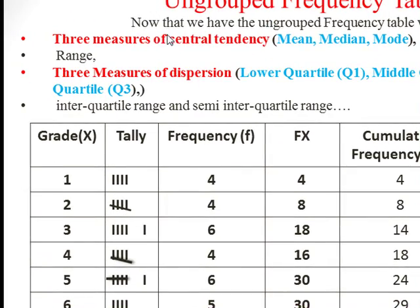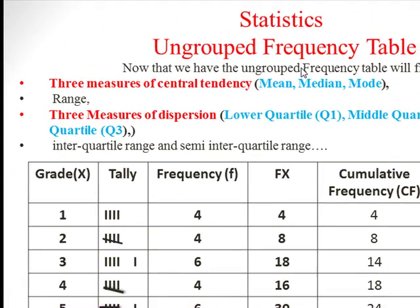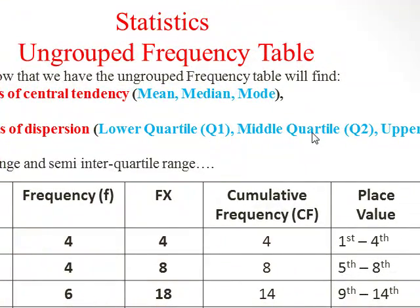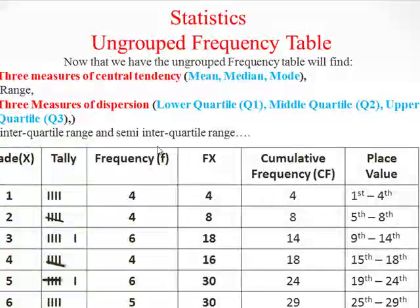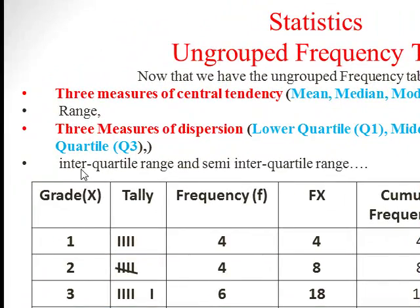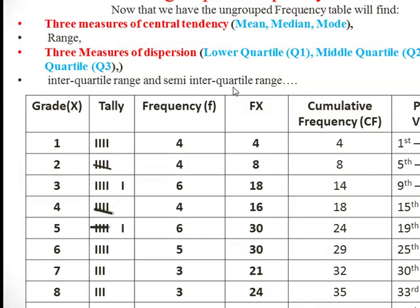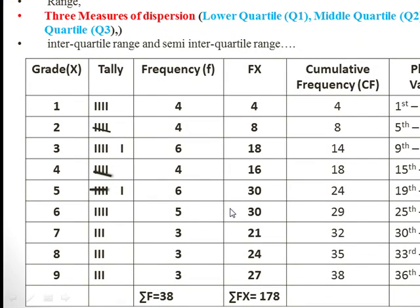Now that we have the ungrouped frequency table, we want to find the three measures of central tendency — mean, median, and mode — the range, the three measures of dispersion: lower quartile Q1, middle quartile Q2, and upper quartile Q3. We also want to find the interquartile range and the semi-interquartile range. This is the table constructed from the previous video.